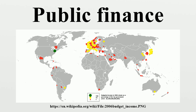Economists classify government expenditures into three main types. Government purchases of goods and services for current use are classed as government consumption. Government purchases of goods and services intended to create future benefits, such as infrastructure investment or research spending, are classed as government investment. Government expenditures that are not purchases of goods and services, and instead just represent transfers of money, such as social security payments, are called transfer payments.